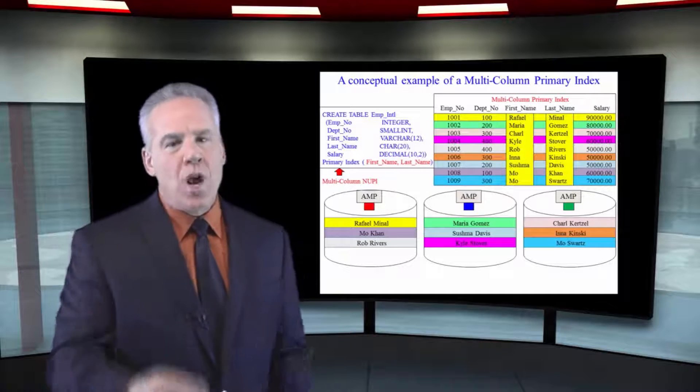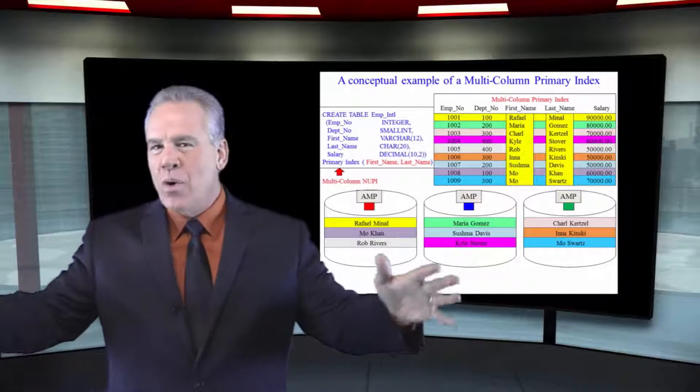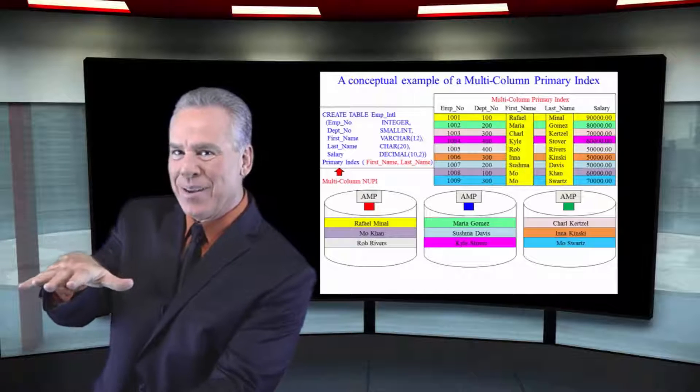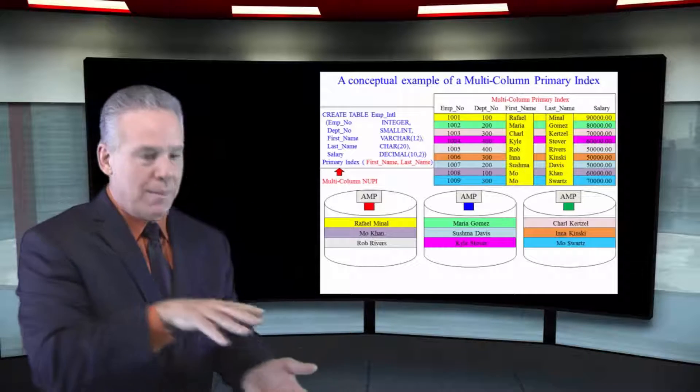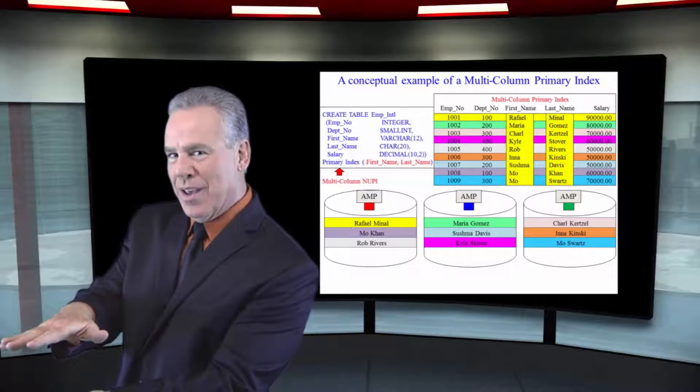Why would we do this? Well, maybe we had last name in the beginning, but our distribution wasn't all that good because all of the Smiths went to the same AMP. But when we put first name and last name combined, Mary Smith went to a different AMP than John Smith.